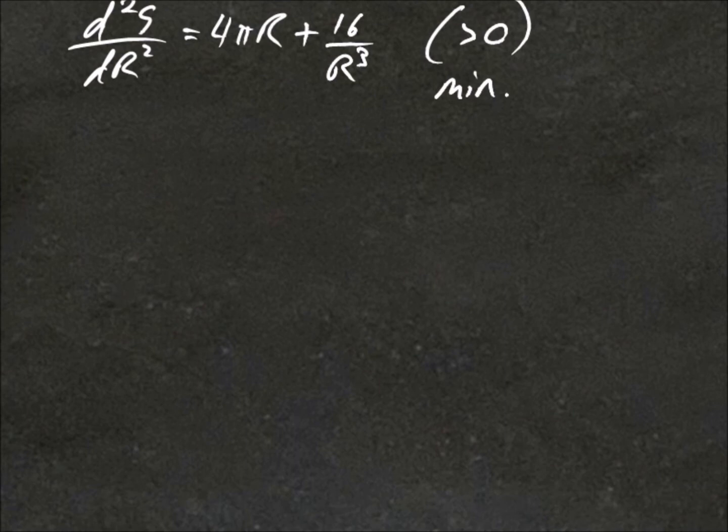So we know that using this r value that we previously got would give us the minimum radius. If we sub this into our h value, the height of the water tank, this would give us...